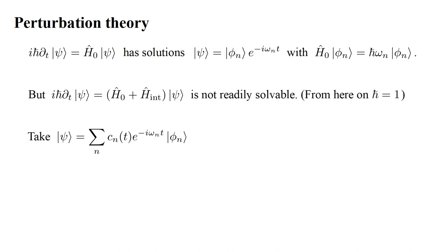We have been analyzing the problem where for Hamiltonian H-hat zero, the Schrödinger equation is satisfied by stationary states with spatial part phi n and time dependence e to the minus i omega n t. But with the addition of a perturbation, an interaction Hamiltonian H-hat interaction, the Schrödinger equation is not readily solvable. Our approach is to represent the solution as a superposition of the stationary states of the original unperturbed problem.